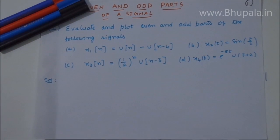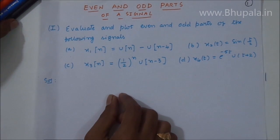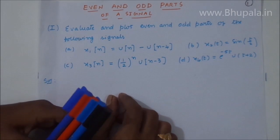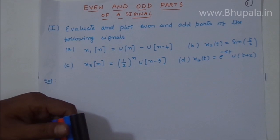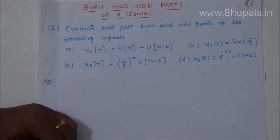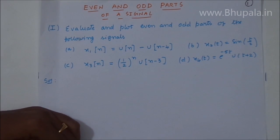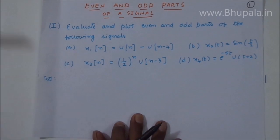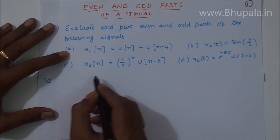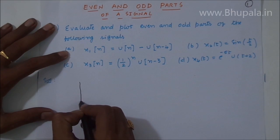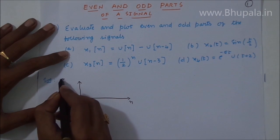Let us try to find, evaluate, and plot the even and odd parts of the following signals. These questions have been adapted from 'Signals and Systems' by Oppenheim and Willsky. Let us try to solve a few of them and then move on to other parts of the lecture. We'll start with the first question — signal x1 of n — and see how the plot of this signal looks.